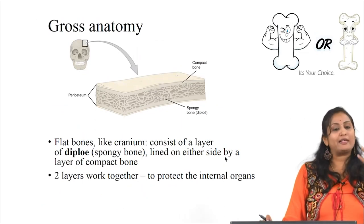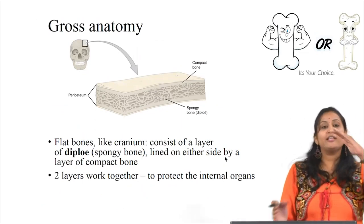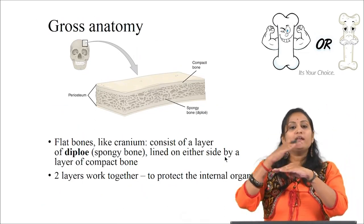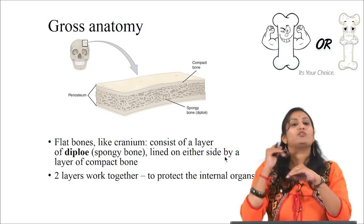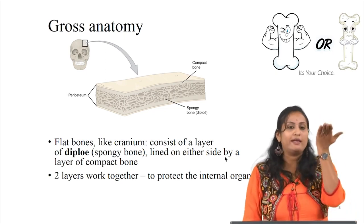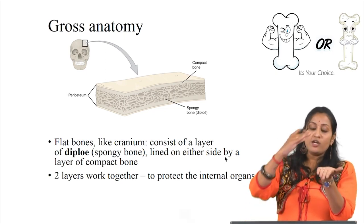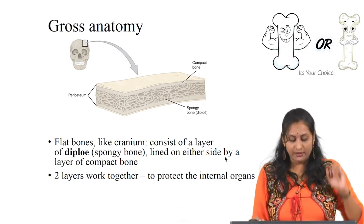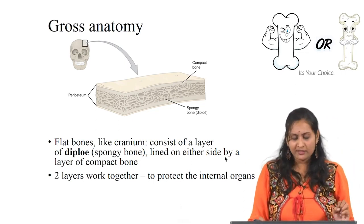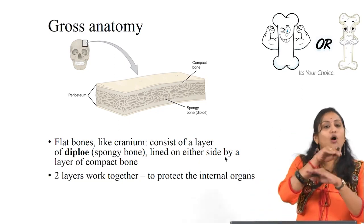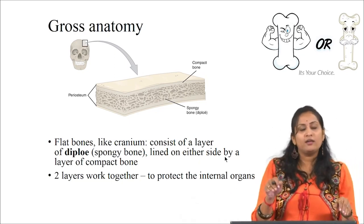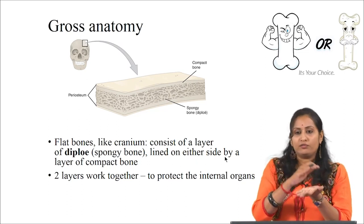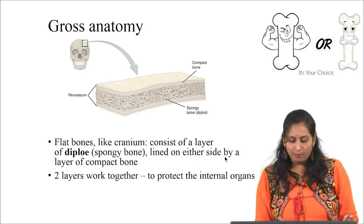Whereas flat bones like the cranium are made up of a layer of spongy bone lined on either side by layers of compact bone. The layer of spongy bone and the two layers of compact bone work together to protect the internal organs. If there is a fracture in the outer cranial bone, the brain is still protected by the inner compact bone layer.